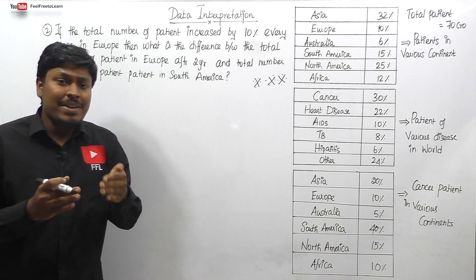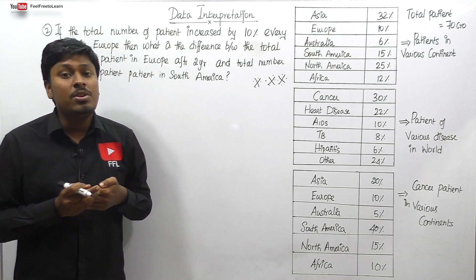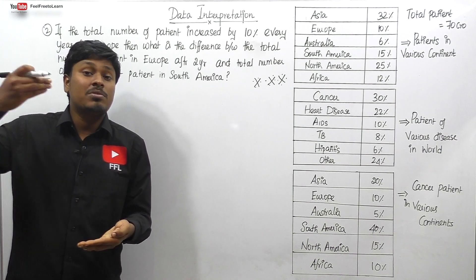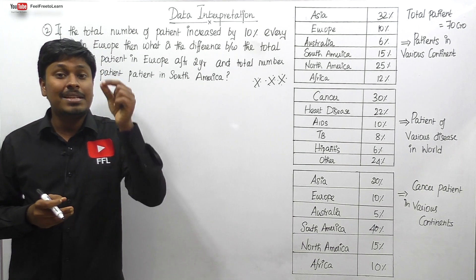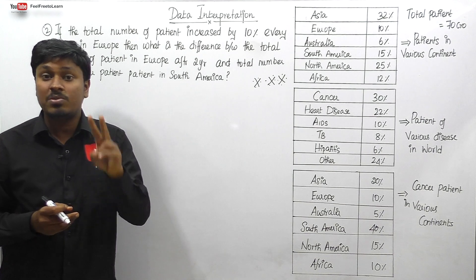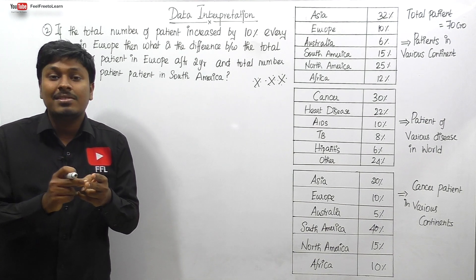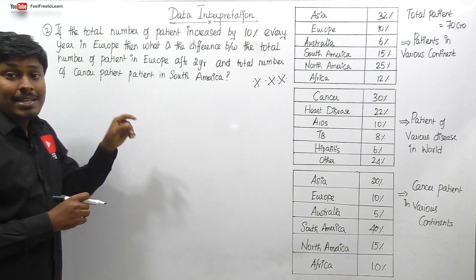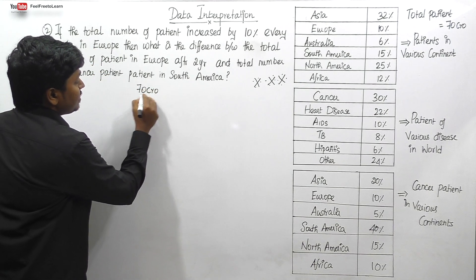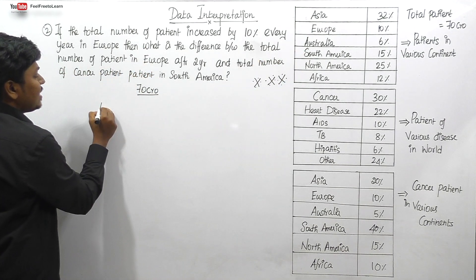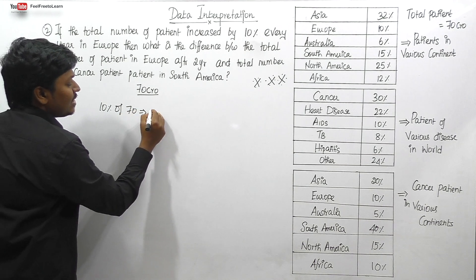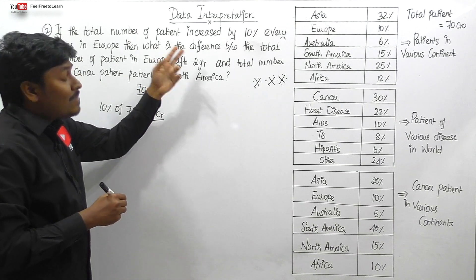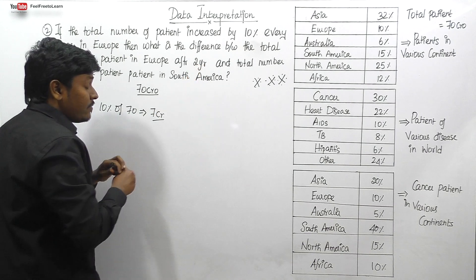For population increase problems, we use the compound interest formula: P × (1 + r/100)^n. For population decrease or finding population ago, use P / (1 + r/100)^n. Here, total patients in Europe = 10% of 70 crores = 7 crores. We need to find the population after two years with 10% annual increase.